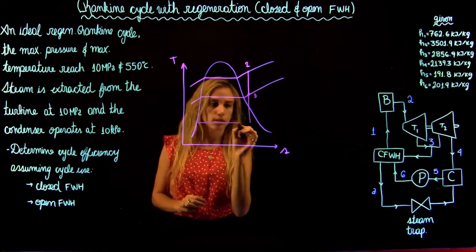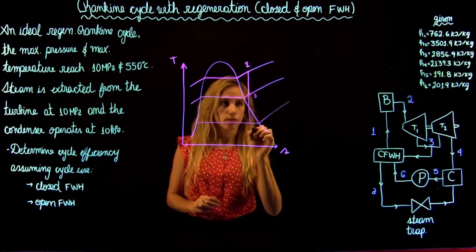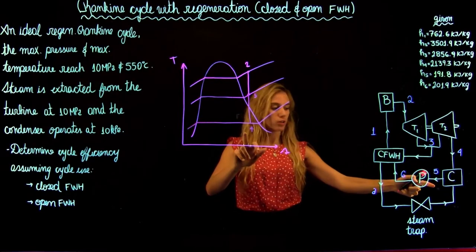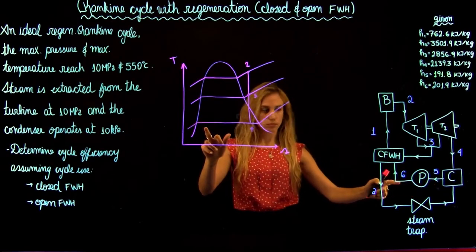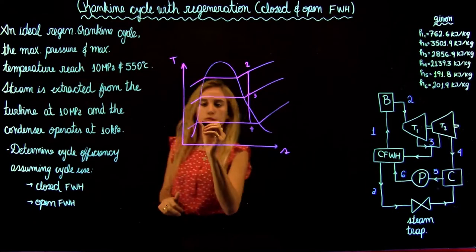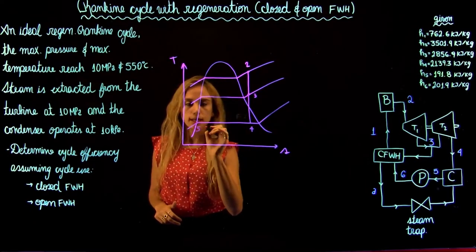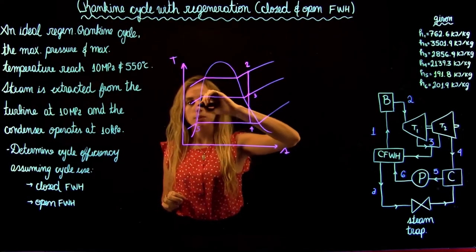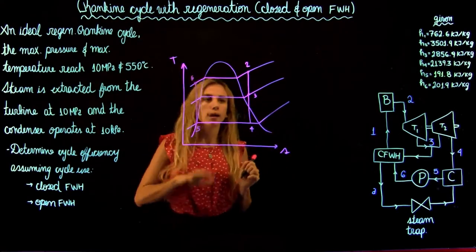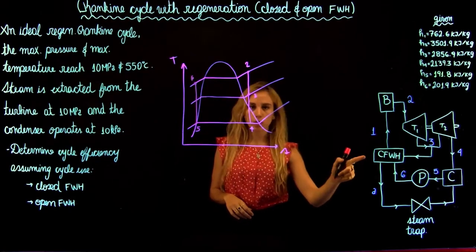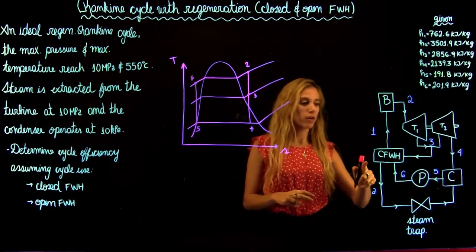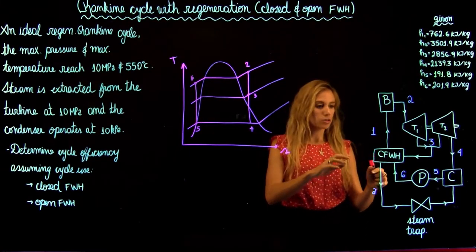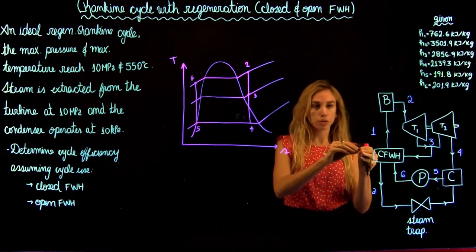So state four is at the condenser. After the condenser we go to state five, where we're going to be in the liquid state. Then the liquid is going to get pumped to six, going to the higher pressure. In a closed feedwater heater, we have two flows that are going through which are not mixing. We have the flow from six to one that is going through the pipes.